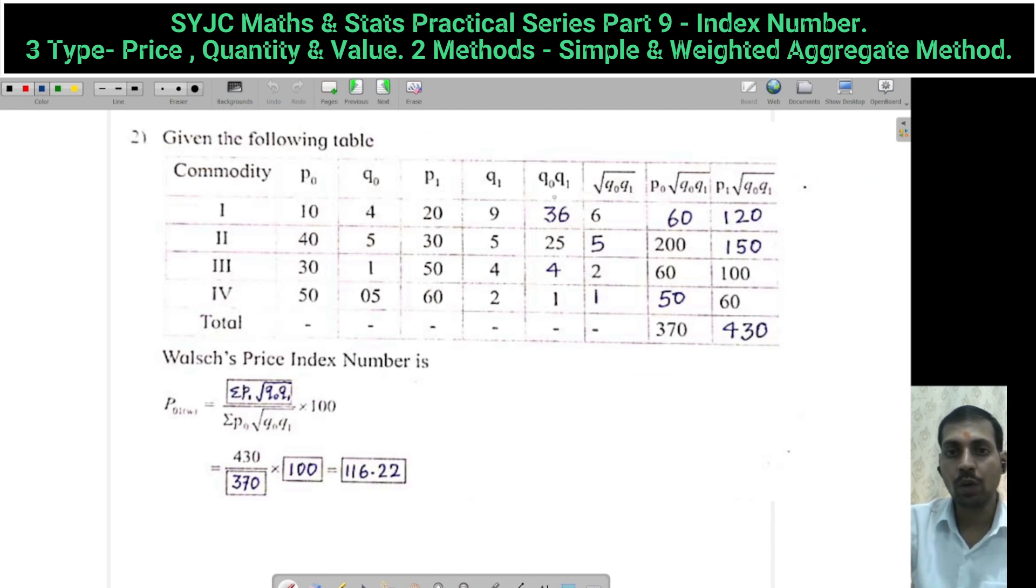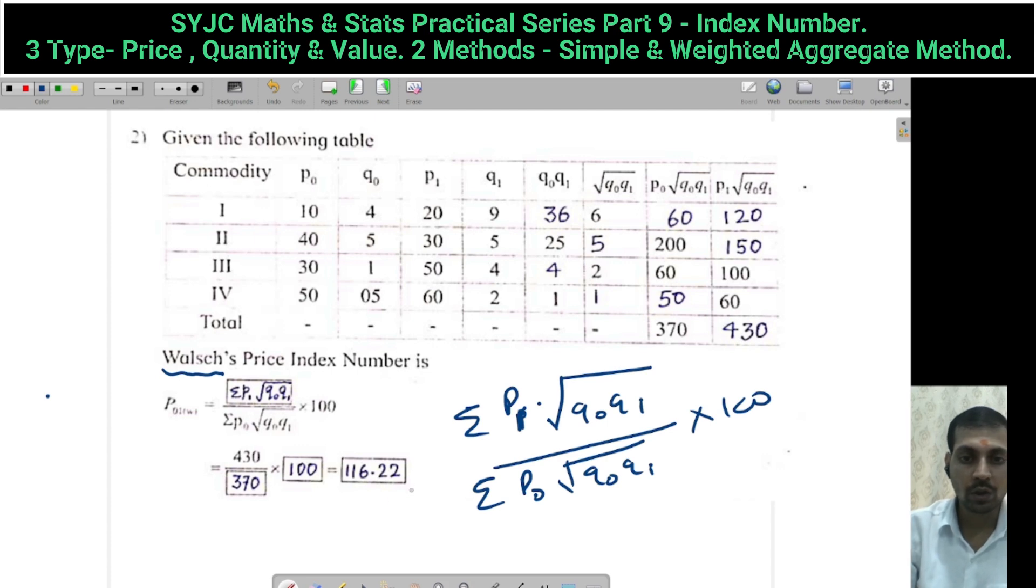Next: P0Q0, Q1, under root Q0Q1, P0 times under root Q0Q1, P1 times under root Q0Q1. This special formula is Walsh Index Number. The formula is: summation P1 multiply by under root Q0Q1 upon summation P0 under root Q0Q1 into 100. This is P01 bracket W.